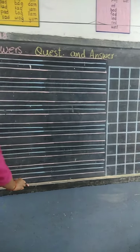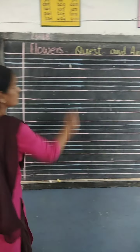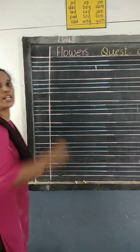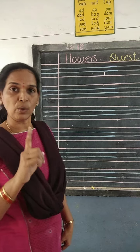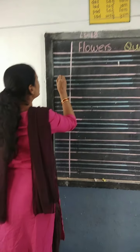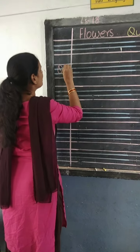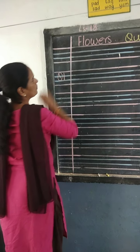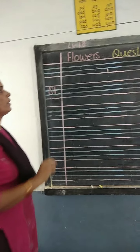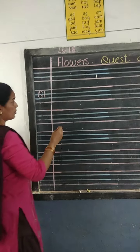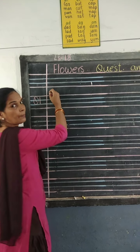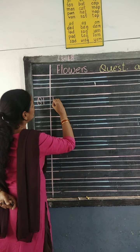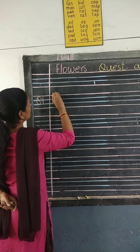Okay, now leave the first line. Leave first line, children. And write question number 1 — write in the margin. Question number 1. Okay? Come on, start writing. Put your pencil on the pink line — 1, 2, 3 lines.